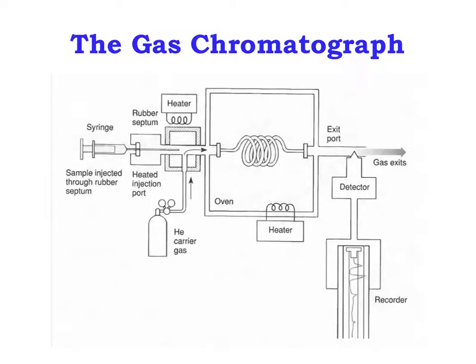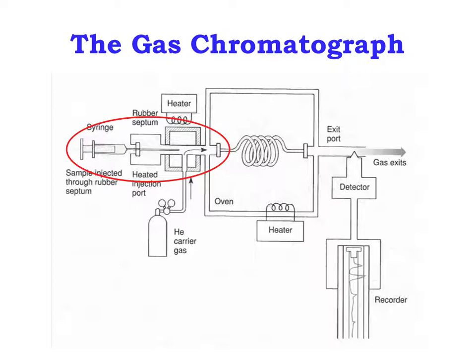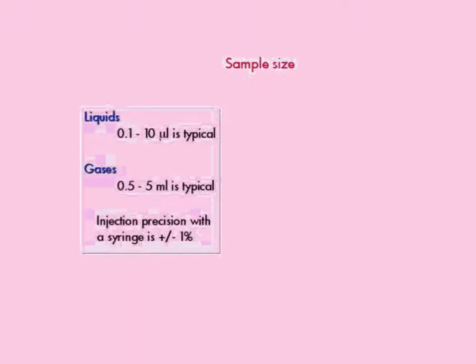This is a diagram of a gas chromatograph. Note that several components of the instrument are heated — they really are hot. Be careful not to touch them when you go into the instrument room. To begin the process, the sample is injected into the instrument using a syringe. Once the sample is volatilized in the heated injection port, it is mixed with the carrier gas and moves into the column. The sample size is typically very small, less than one microliter for liquids.